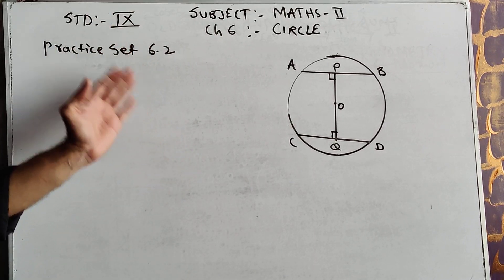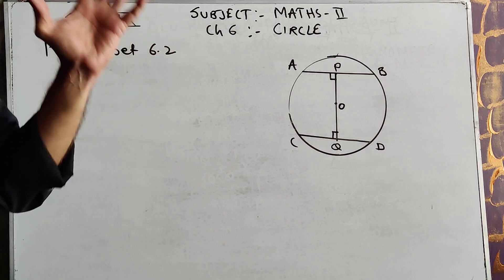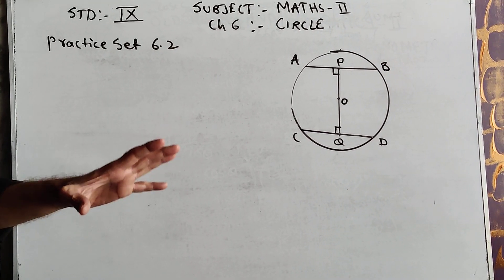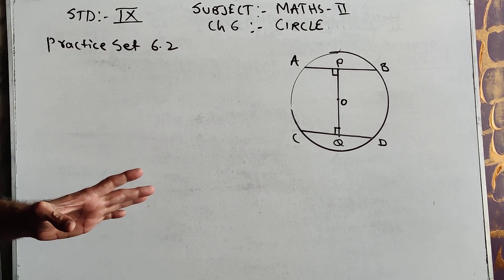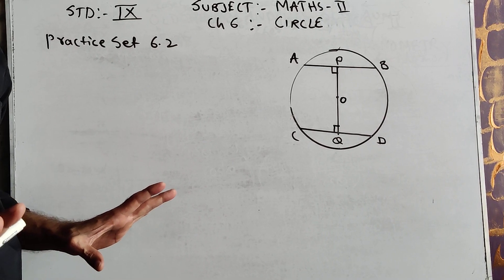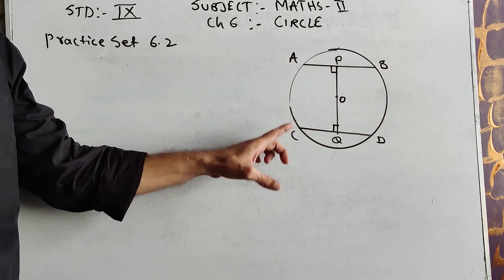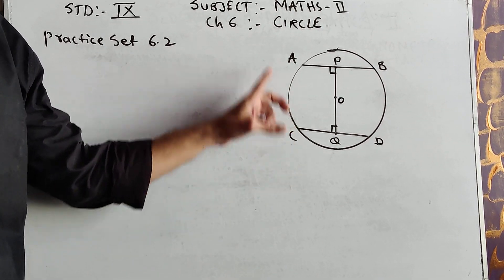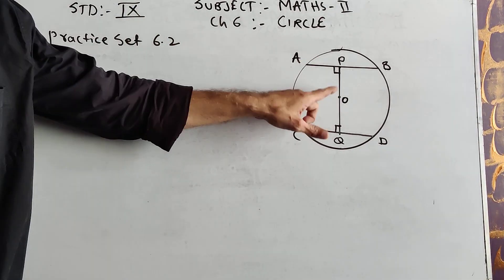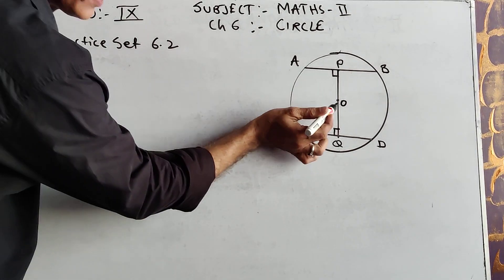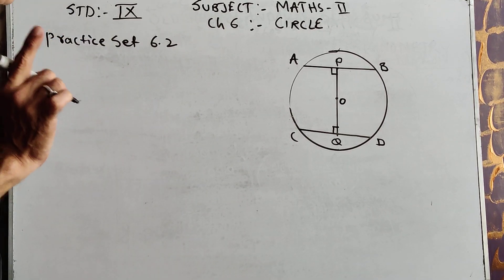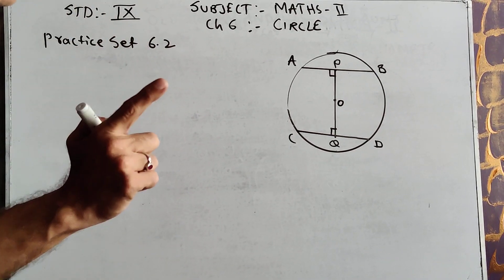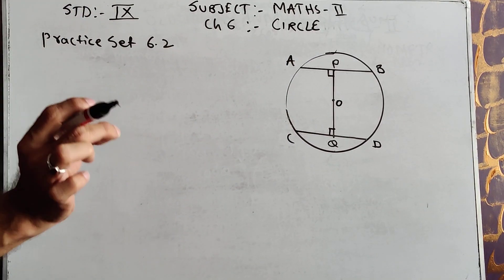Before starting Practice Set 6.2, you should know what is there in this. The most important for Practice Set 6.2 is the theorem — but it is the application of the theorem that is important, not solving the theorem. The theorem says that if two chords are congruent — chord AB and chord CD, as you can see in the diagram — then congruent chords are always equidistant from the center, meaning the distance from the center will be the same.